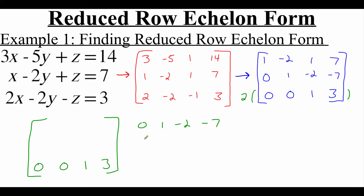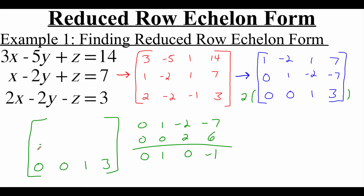Two times zero is zero, two times zero is zero again, two times one is two, and two times three is six. So when I add these together I get zero, one, zero, negative one — which is what I need that middle row to look like with the zero, one, zero. So I'm going to fill that in as the second row in the reduced form that we're building.